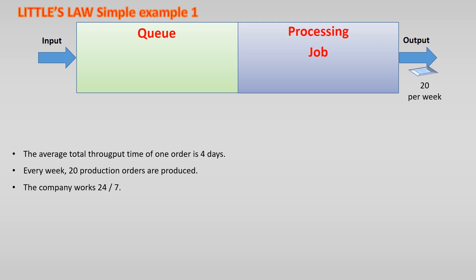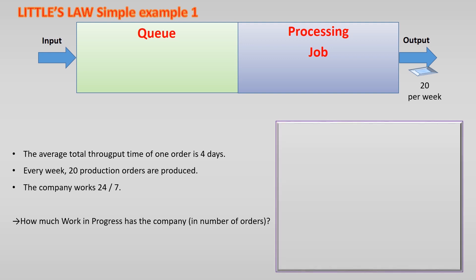So, how many orders are there in the production system? In other words, what is the work in progress in this system? Well, if we take Little's Law that states the work in progress equals the throughput multiplied by the total time it takes for an order to go through the system, we can calculate this WIP.